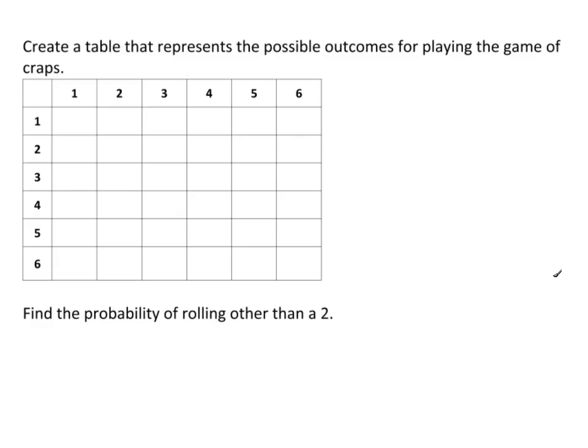Okay, the last thing we're going to do here is create a table that represents the possible outcomes for playing the game of craps. And I want to find the probability of rolling other than a 2. Well, the idea here is that this is one die and this is the outcome of the second die. And what you do when you play craps, you throw two dice and you add them up. Well, 1 plus 1 is a 2. So if I get 1 on both of them, I get a 2. 1 and 2 is 3, 1 and 3 is 4.